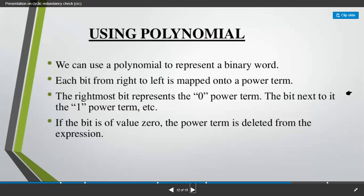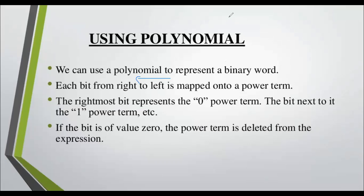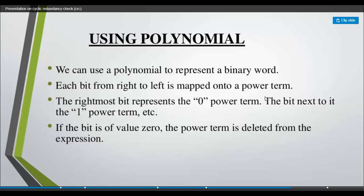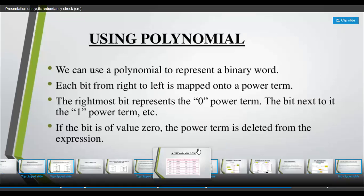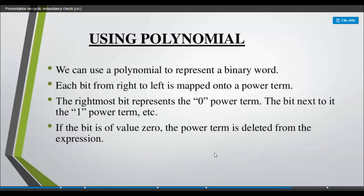Now, how can you utilize all these things through polynomial representation? We can use a polynomial to represent a binary word. Each bit from right to left has to be the power term. The first one will be x power zero, then x power one, then x power two, and so on. The value of x power zero is always equal to one. So we will see now how it looks.